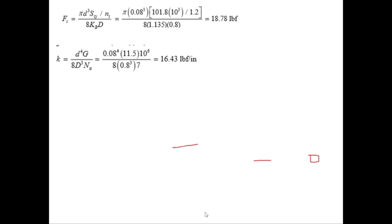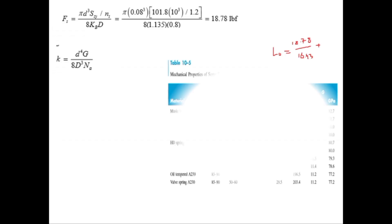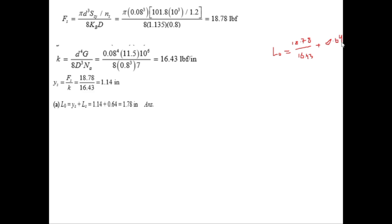Putting the values will give you K is equal to 16.43 lbf per inch. So L0 is equal to 18.78 divided by 16.43 plus 0.64 and that will give you L0 is equal to 1.78 inches.